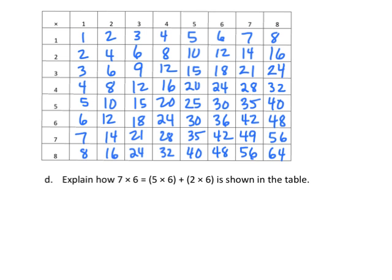So we can use this table to also be useful in terms of explaining things. For example, how do we know that 7 times 6 is, well, first off, we know that 7 times 6 is 42. But how do we know that 7 times 6 is equal to 5 times 6 plus 2 times 6? Well, the idea would be, in our chart, we can see, well, here's 7, here's 6. So 7 times 6 gives us 42, alright?